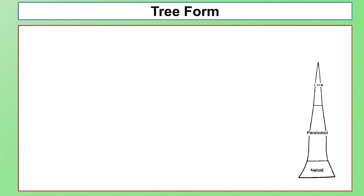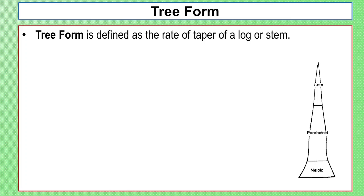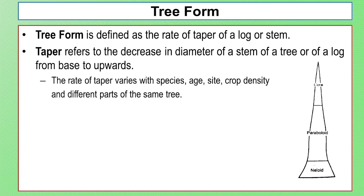The Specific Gravity method: Volume equals Weight divided by Specific Gravity. Now, moving to Forest Mensuration Chapter 3 on tree form. Tree form is defined as the rate of taper of a log or stem.